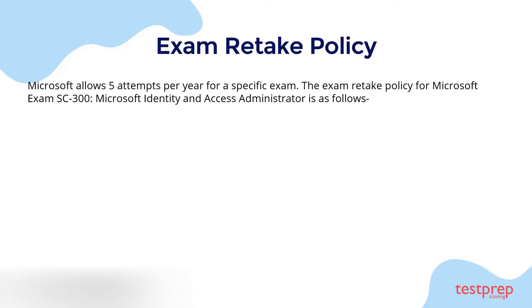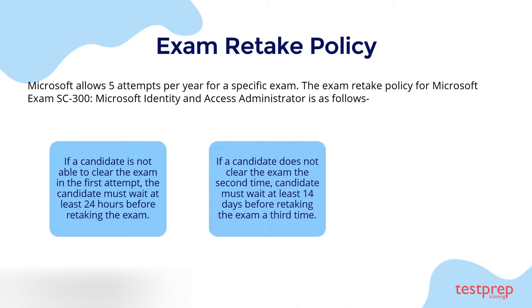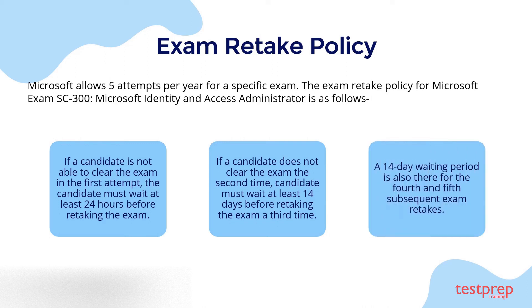Microsoft allows five attempts per year for a specific exam. The retake policy is as follows: if a candidate does not clear the exam on the first attempt, they must wait at least 24 hours before retaking. If they do not clear it the second time, they must wait at least 14 days before retaking a third time. A 14-day waiting period also applies to the fourth and fifth subsequent exam retakes.